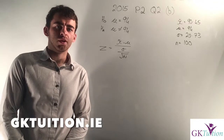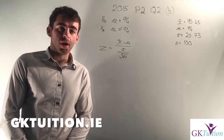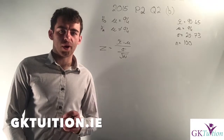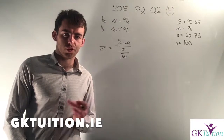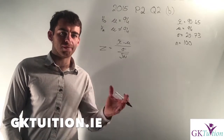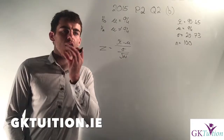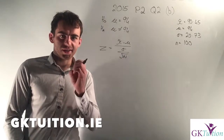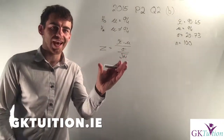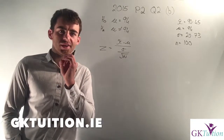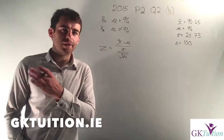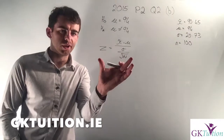For Part B of this question, we're told that the supermarket has claimed the average amount spent by each shopper that Saturday was €94. Based on the survey from the previous part, we're asked to investigate if this claim is true. We need to state our null hypothesis and alternative hypothesis. For the marking scheme, they accepted using the confidence interval from Part A, or using the one-sample z-test formula from the top of page 35 in your log tables. When a question says to test at the 5% level of significance, I always tell my students to use that formula — it's just a better habit.